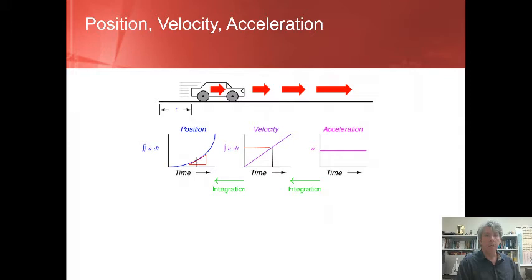Notice that the velocity graph is a straight line. This is due to the constant acceleration chosen for this illustration. Velocity is to acceleration as position is to velocity. In other words, the slope of the velocity versus time curve is equal to the acceleration. Since the velocity curve has only one slope, the acceleration is a constant value over time.